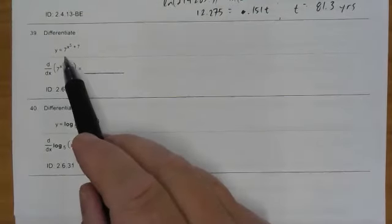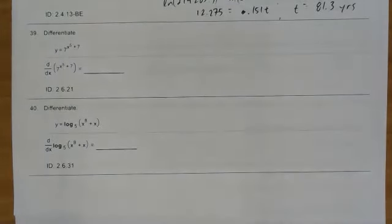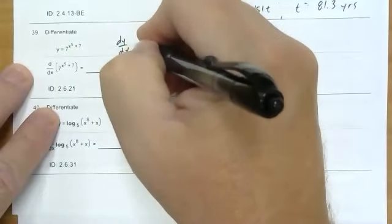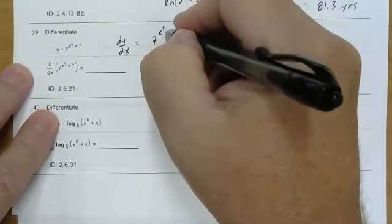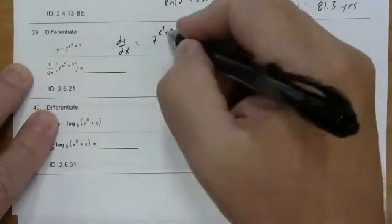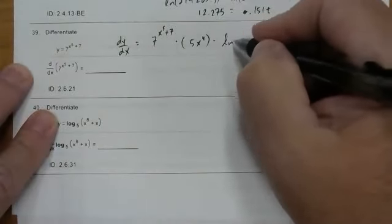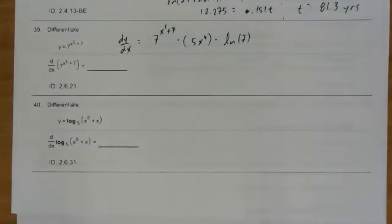Now we have y = 7^(x⁵+7), which is a regular exponential function, not a natural exponential. The rules are different — there's an extra step. Copy down the exponential function, multiply by the derivative of the exponent (5x⁴), and then also multiply by ln of the base, which is ln(7). That's your answer.